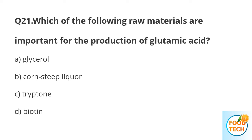Question 21. Which of the following are important for the production of glutamic acid? A. Glycerol. B. Corn steep liquor. C. Tryptophan. D. Biotin.